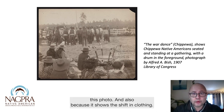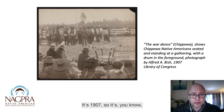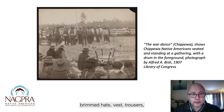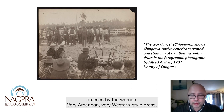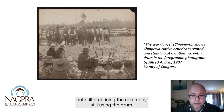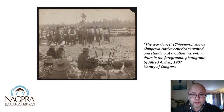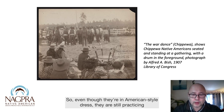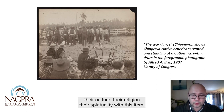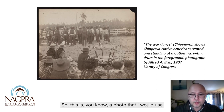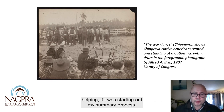I really like this photo also because it shows the shift in clothing. It's 1907, so there are brimmed hats, vests, trousers, and dresses by the women — very American, very Western style dress — but still practicing the ceremony, still using the drum. Even though they're in American style dress, they are still practicing their culture, their religion, their spirituality with this item. This is a photo I would use to help if I was starting out my summary process — what is being used by these communities? You can just tell by how ornate the drum is that it's special; it's not your average drum. These are all clues to it being sacred.